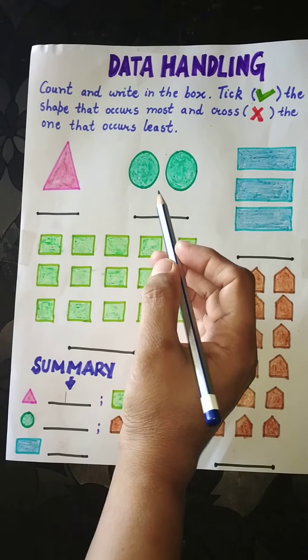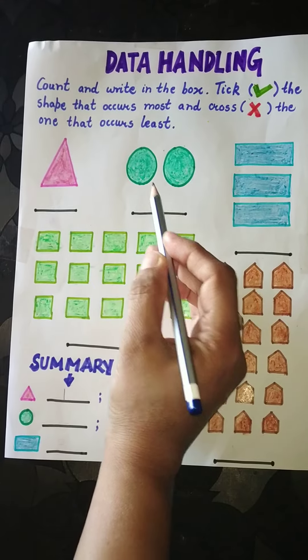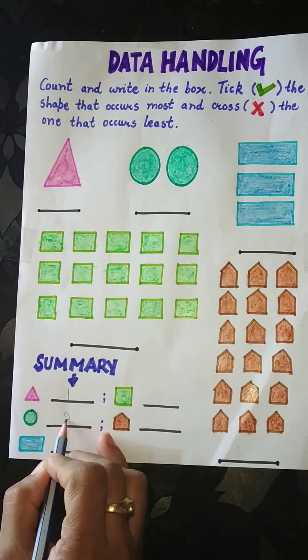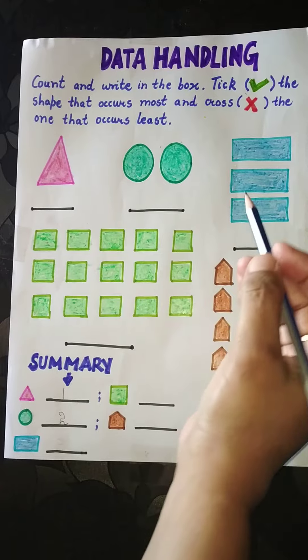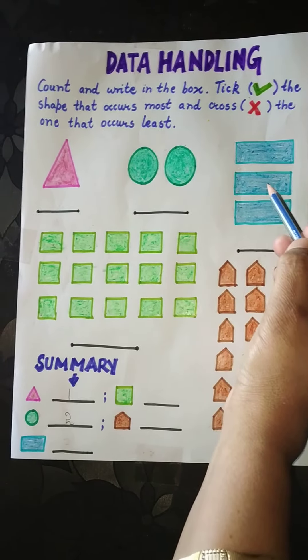Then how many circles are present? Count them. One, two. How many rectangles are present? One, two, three.